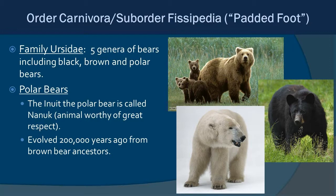Now we move to polar bears — Suborder Physipedia (padded foot), Family Ursidae. There are five genera of bears including black, brown, and polar bears. Polar bears evolved and split from brown bear ancestors around 200,000 years ago, with unique adaptations that make them a marine mammal. The Inuit name for polar bears is 'Nanuk,' meaning 'animal worthy of great respect' — and seeing them up close, they are very large, very powerful, serious predators.